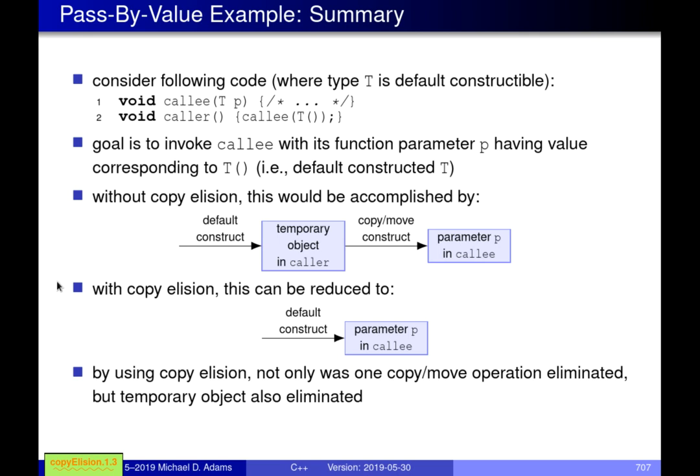In the last lecture we were talking about copy elision. We're also going to be talking about something related to this — moving and copying — something called implicit moving. I want to start by going through an example in more detail of pass by value in a situation where copy elision happens. The particular example is this simple code at the top of the slide.